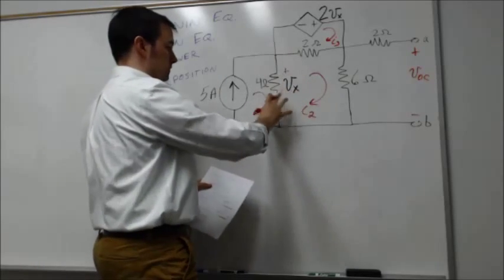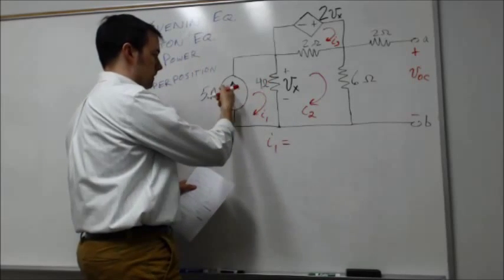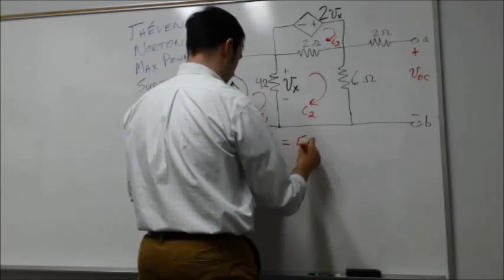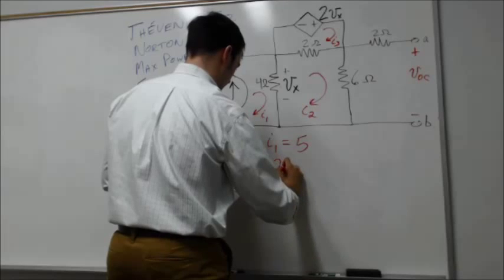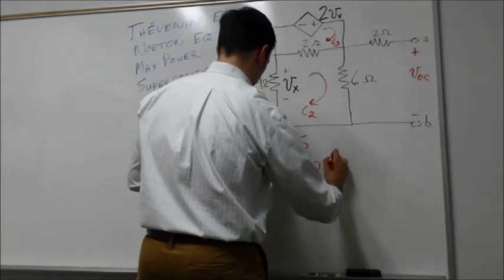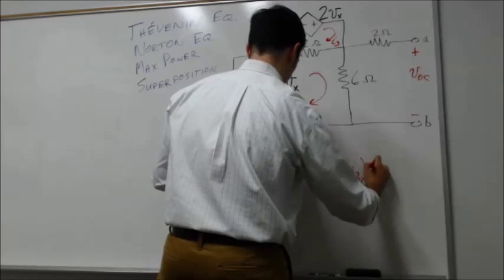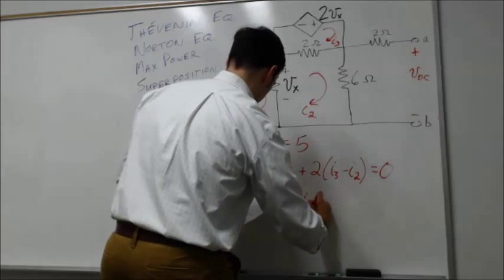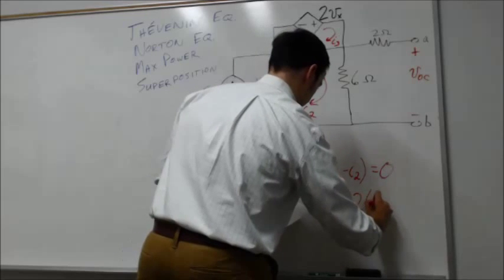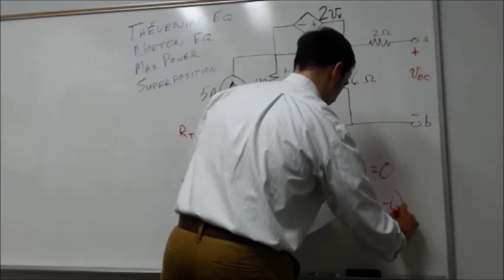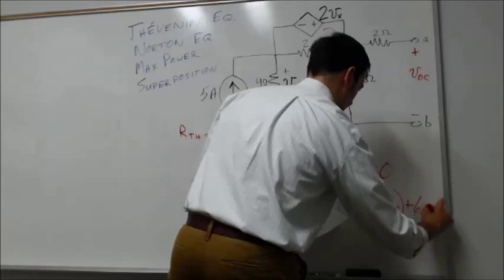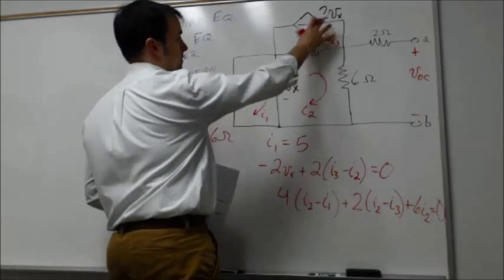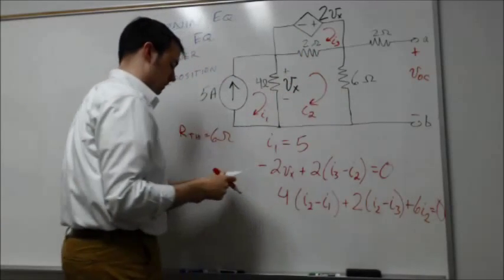Defining mesh currents I₁, I₂, and I₃: since the terminals a and b are open, no current flows through that branch. Mesh one is straightforward — I₁ = 5 amps directly from the independent current source. For mesh two: −2V_x + 2(I₃ − I₂) = 0. For mesh three: 4(I₂ − I₁) + 2(I₂ − I₃) + 6I₂ = 0.